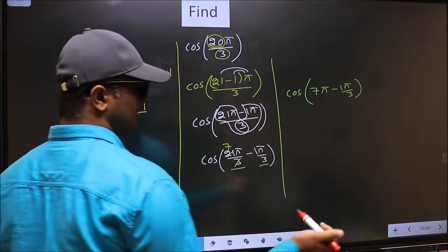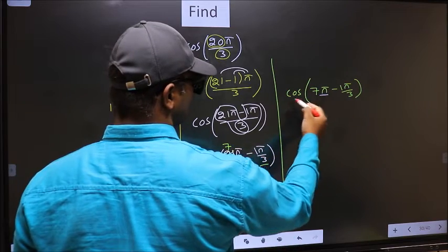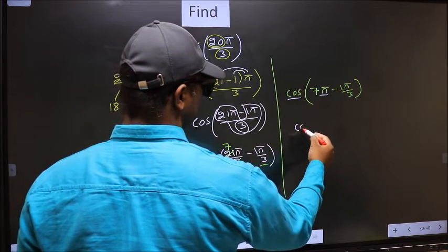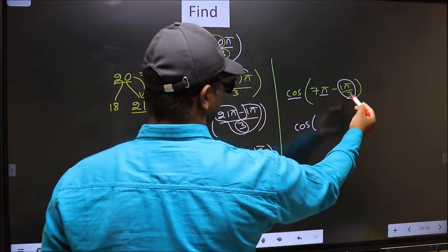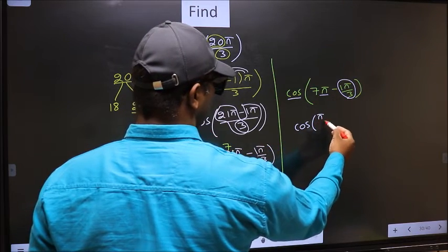Next. Here we have π. So cos is not going to change. It will remain cos. And inside we get this angle π by 3.